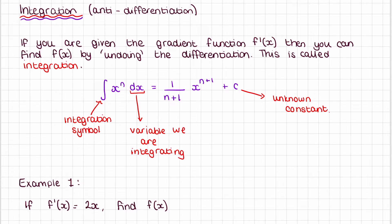This is our notation — the big long S-shaped symbol is the integration symbol. When we have dx, or a letter at the end, that tells us what variable we are integrating. The actual integration formula, which I'll underline in pink, is 1 over (n+1) multiplied by x to the power of (n+1). Then we have to add c, which is an unknown constant.